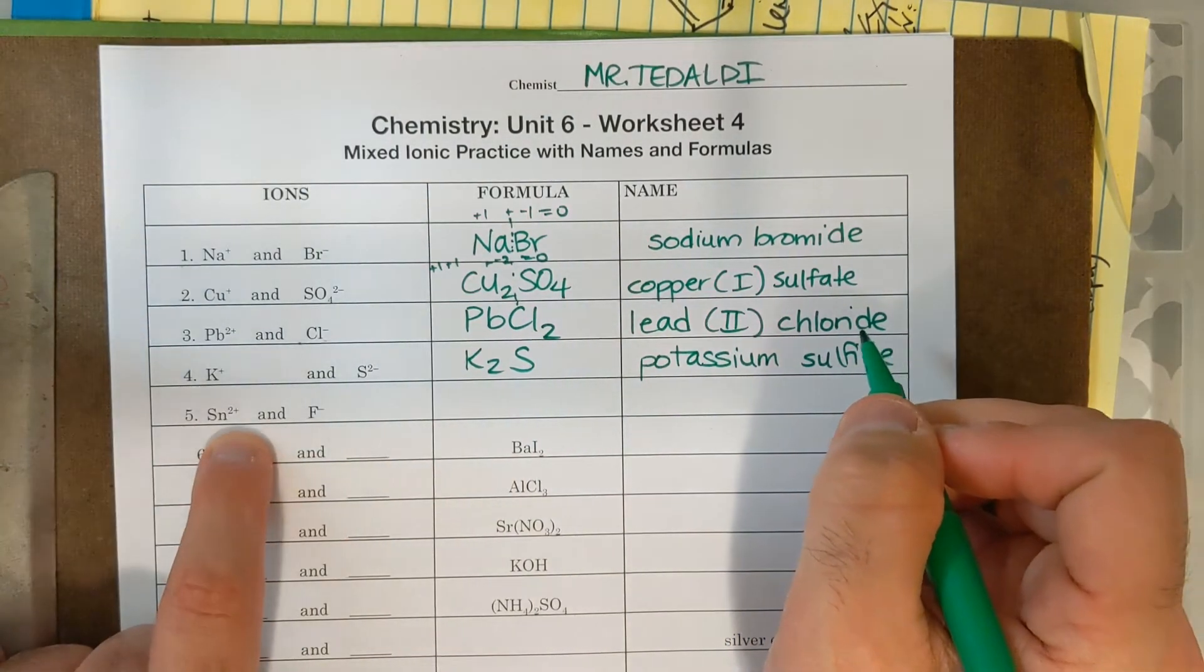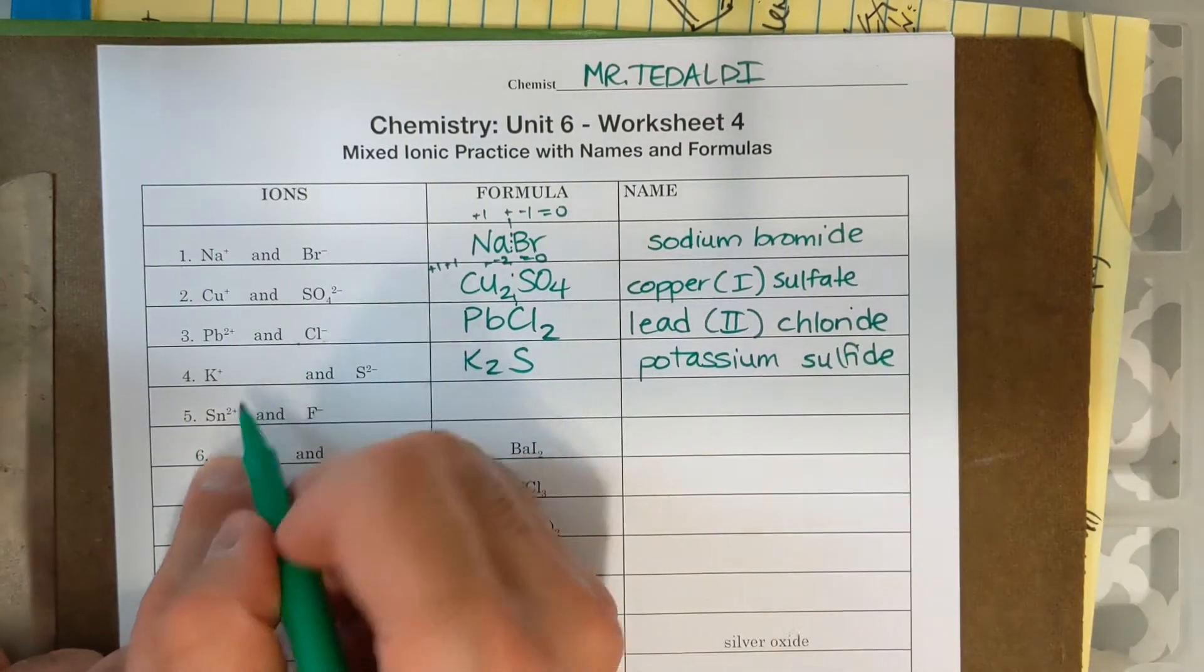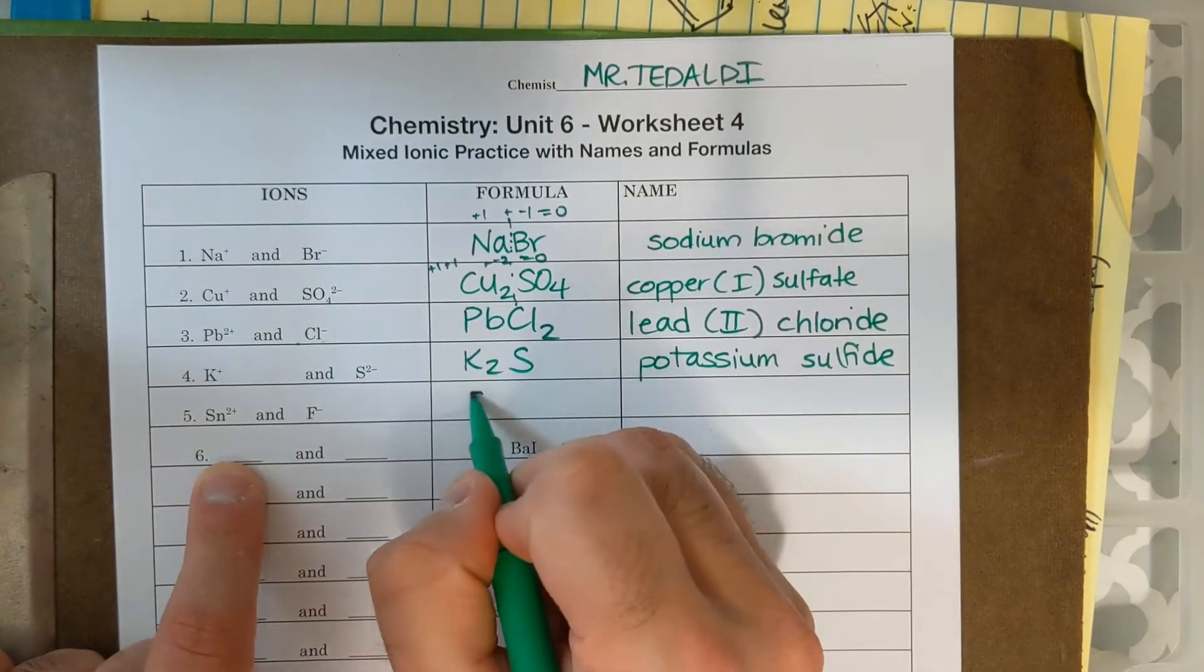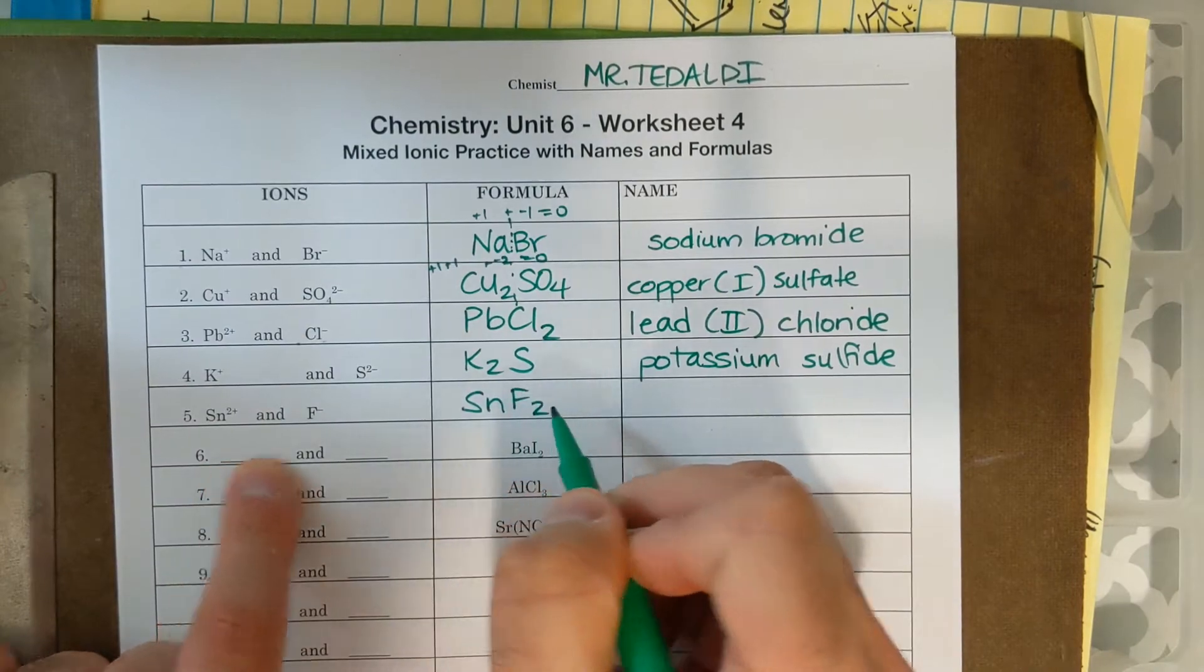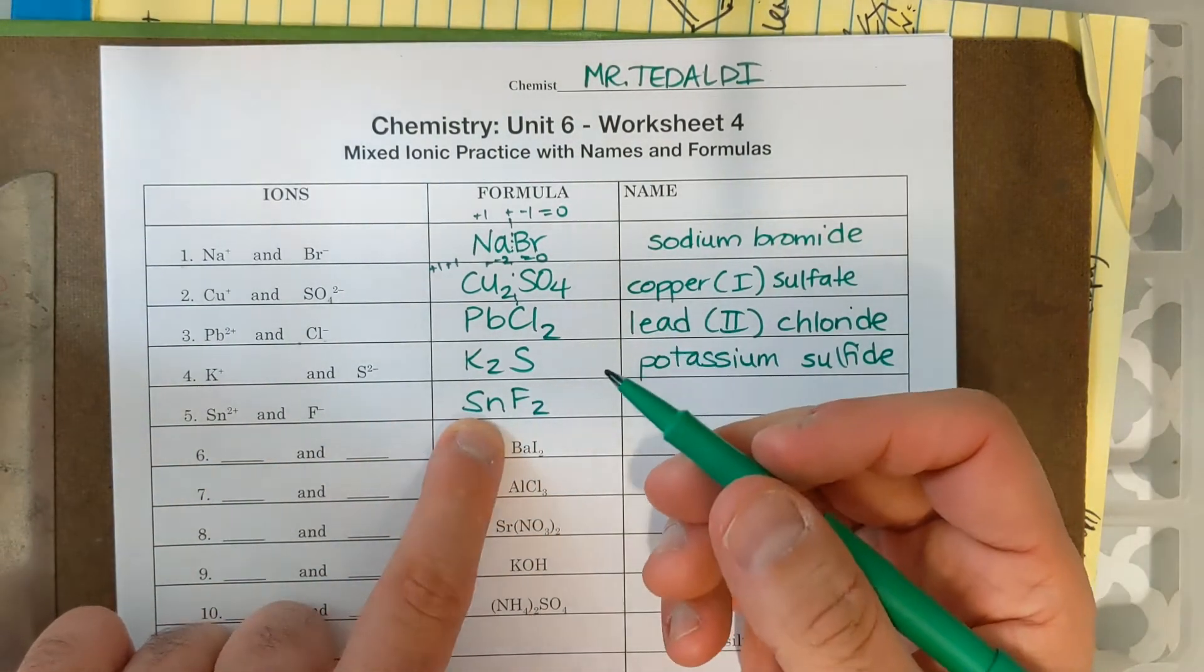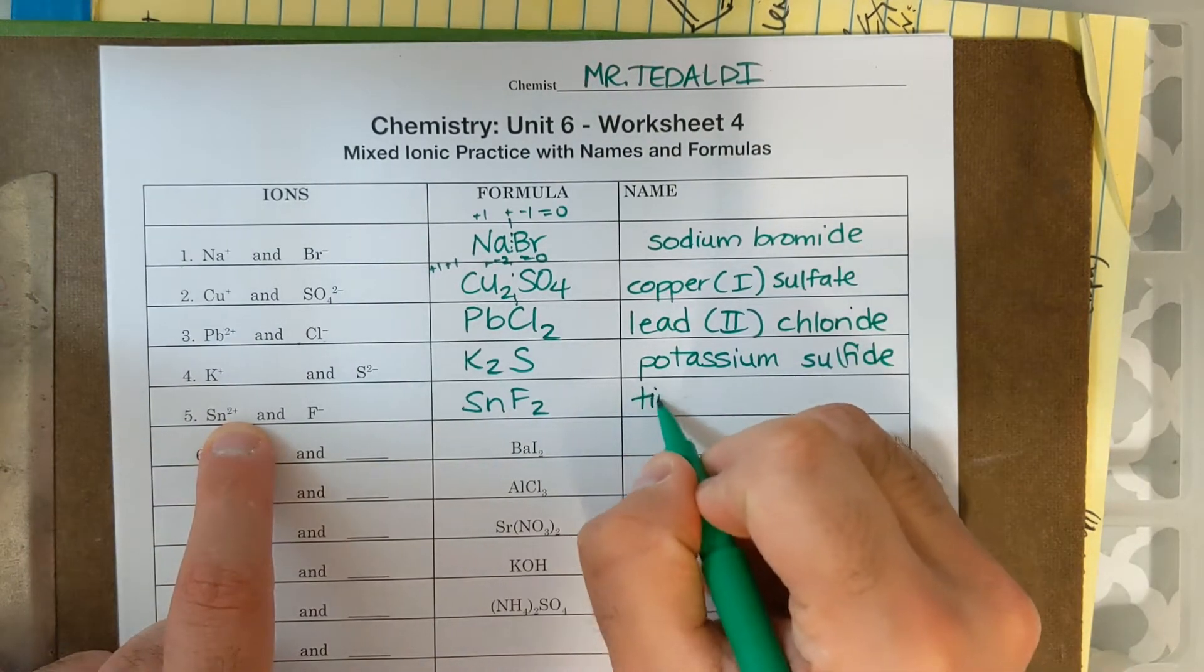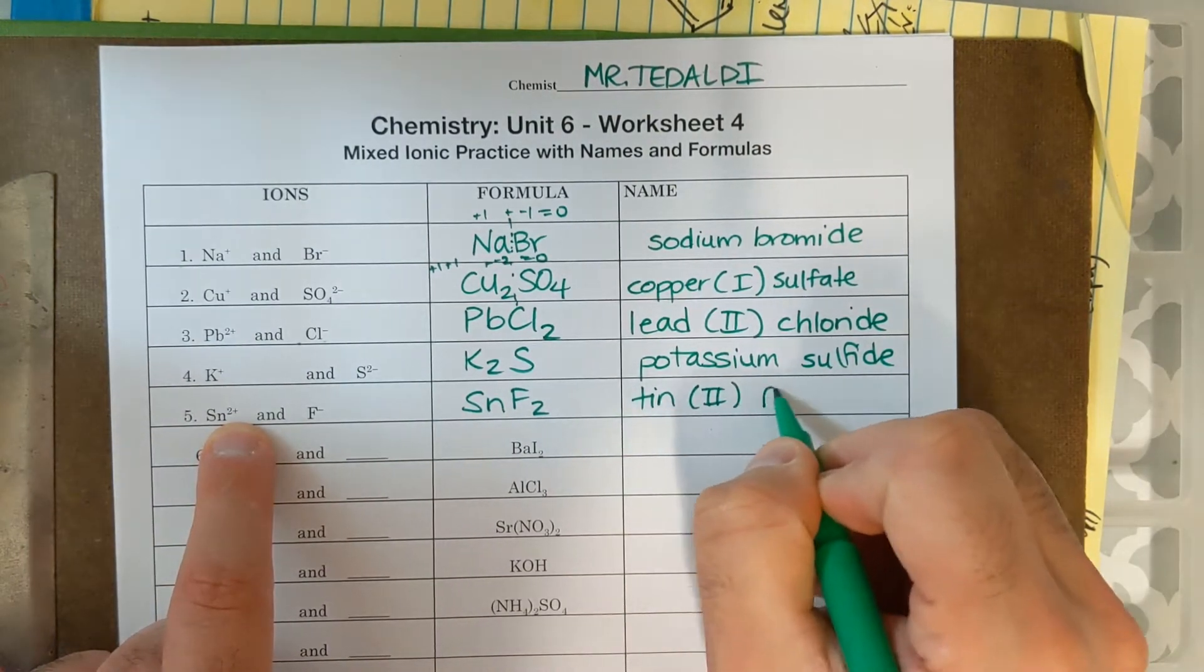Next one, SN, which is tin, and F minus, SN two plus, and F minus one. If I do the crisscross method, I'm going to need two Fs for one SN. SN is going to need a Roman numeral, it's a transition metal. Its charge is two, so it's going to be tin, Roman numeral two, fluoride.